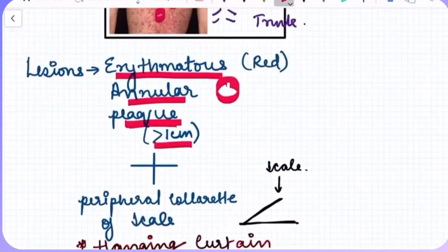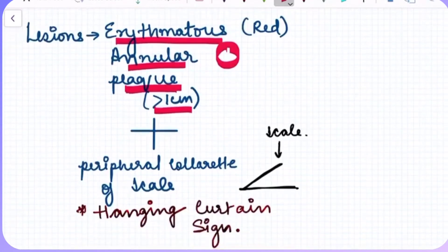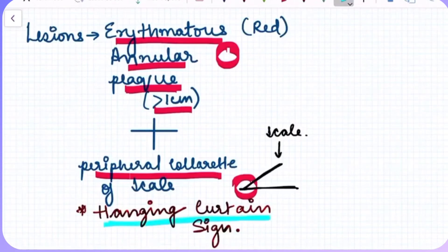Along with that, if we look at this lesion, if you look at the scales, it is present in the periphery of the lesions and called peripheral collarette of scale, and this is called a hanging curtain sign. Important.